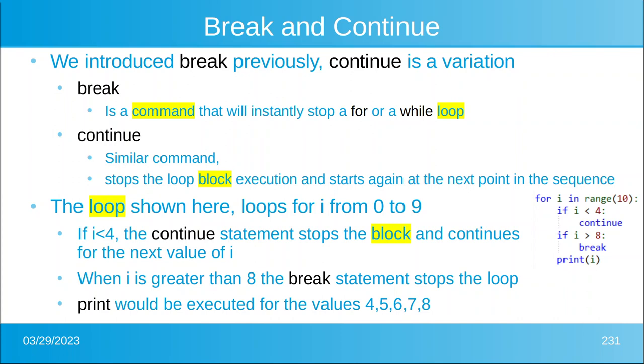If I run this, we would get the numbers four, five, six, seven, and eight, because every time that I is less than four, it does the continue statement. So it ignores everything in the rest of the loops block, but it does do the next item in the sequence. Once we hit I greater than eight, we hit that break command. And sure enough, boom, we drop out and we just don't do anything greater or anything else in the loop.